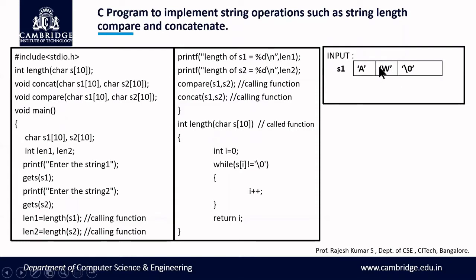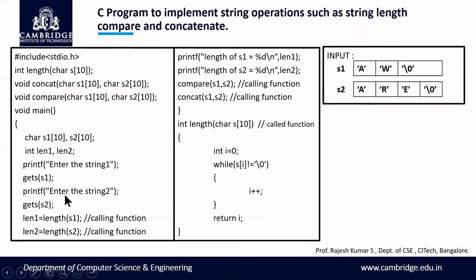I'll store the first string — for example I have taken s1 as "aw". As we know, when a string is stored it ends with a null value, so in array representation you see: s1[0]='a', s1[1]='w', s1[2]=null. Similarly for s2 I'm entering "are", and the compiler puts a null value at the end, so s2 stores 'a','r','e',null.